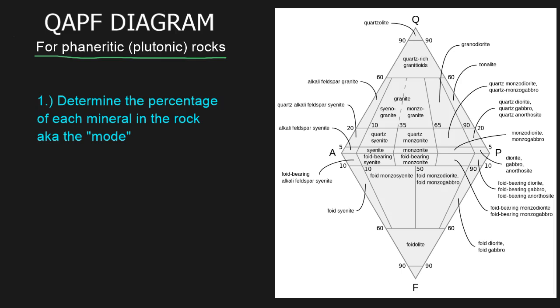So how do we use this diagram? The first thing we have to do is determine the percentage of each mineral in the rock that we are examining. This is sometimes called the mode. After we determine the mode, we're going to plot those mineral percentages on this diagram, and from that we'll come up with a name for that rock. Let me explain this diagram and how it works.